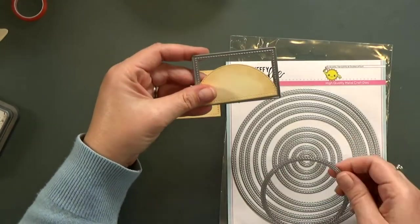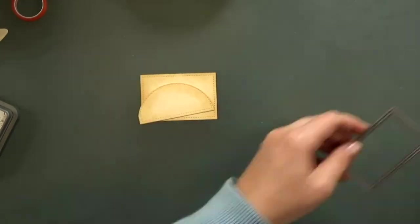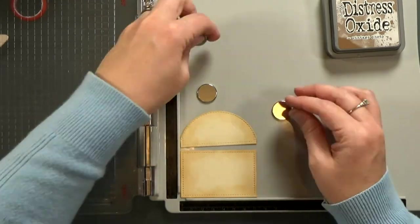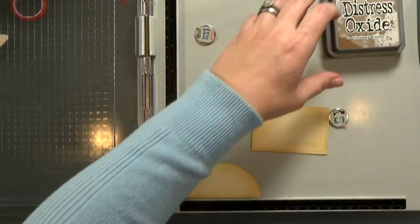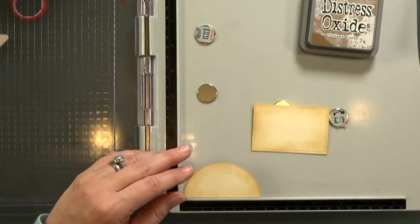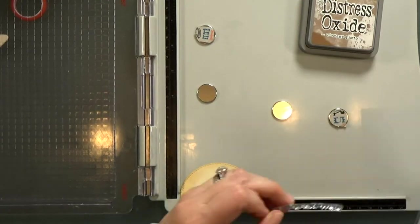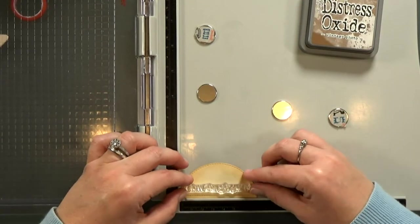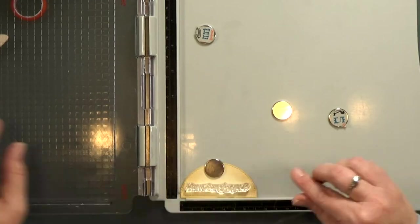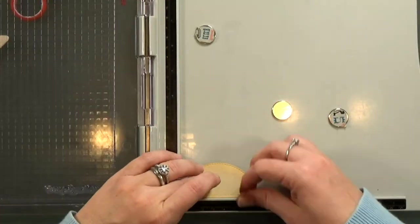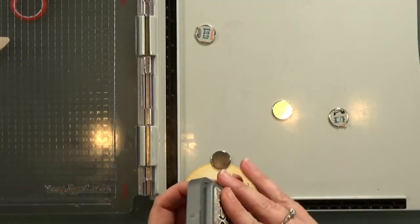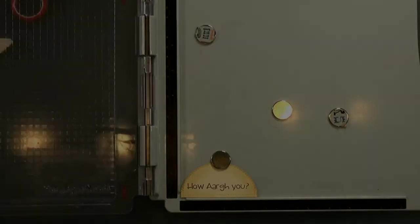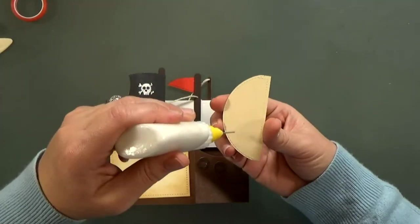For the back, I decided to cut two more stitched rectangles. Then I used a circle to round the top of one. I used some Vintage Photo ink around the edges to make it sort of match the sails and age it a little bit. I'm going to leave the bottom one blank so I can write my message on the card later. And I want to stamp my sentiment on the top piece. I'm just going to line it up in my stamp positioner and then I'll stamp it with some more of that Vintage Photo ink. Then I can glue these two pieces in place.